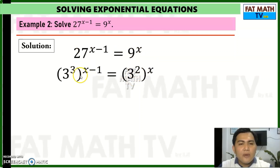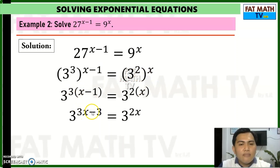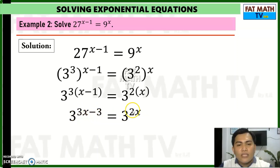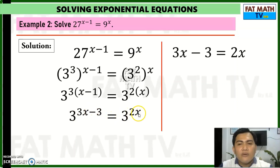Using the properties of exponents, we multiply: 3 times (x minus 1) gives 3x minus 3 for the exponent on the left, and 2 times x gives 2x on the right. Using the one-to-one property of exponential functions, equal exponential expressions with the same base give us equal exponents: 3x minus 3 equals 2x.